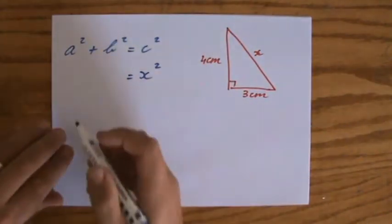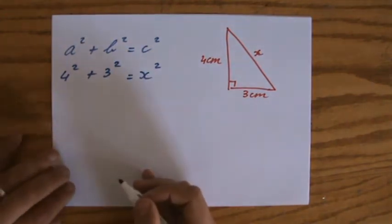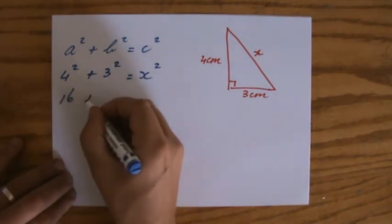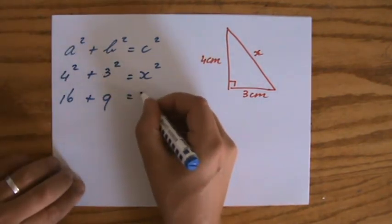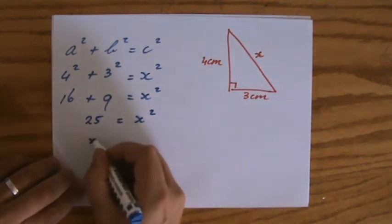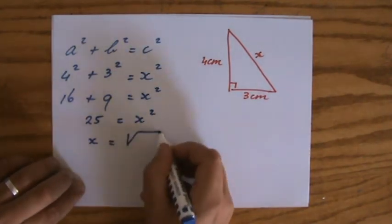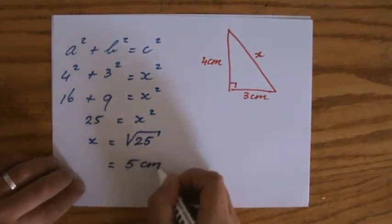And then it really doesn't matter if my A or B. 4 squared plus 3 squared equals my hypotenuse squared. 16 plus 9. 4 times 4 plus 3 times 3 equals X squared. That is 25 equals X squared. So, X then will be the square root of 25, which is 5 centimeters.